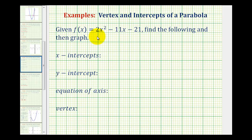Given the quadratic function f of x equals 2x squared minus 11x minus 21, we want to find the x-intercepts, the y-intercept, the equation of the axis of symmetry, the vertex, and then graph the function.